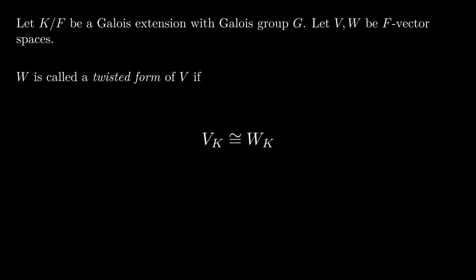It turns out that this is not always the case. If W has this property, that it becomes isomorphic to V over K, then we call W a twisted form of V, regardless of whether it is isomorphic to V as an F-vector space.